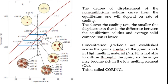Concentration gradients are established across the grains. The center of the grain is rich in the high melting material—nickel in the copper-nickel system. Nickel is not able to diffuse throughout the grain, so the edges become rich in the low melting element, copper. This phenomenon is called coring.